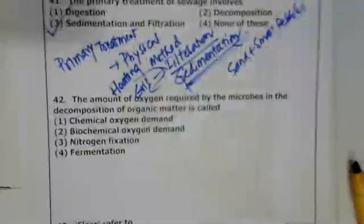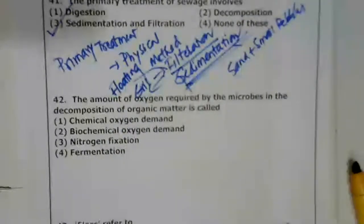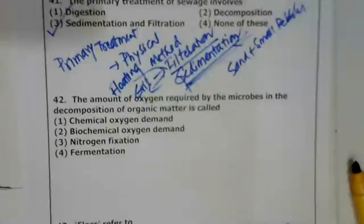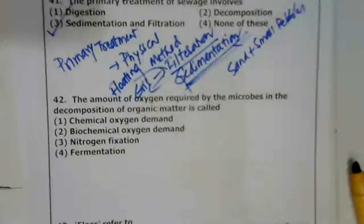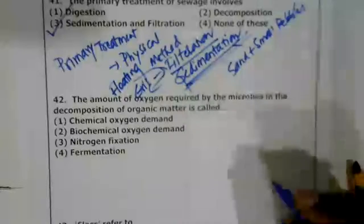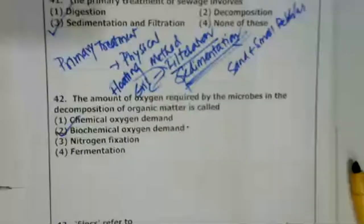Question 42: The amount of oxygen required by microbes in the decomposition of organic matter is called what? BOD — Biochemical Oxygen Demand — estimates the amount of oxygen required by microorganisms to degrade all organic matter present in one litre of sample. If organic matter is high and oxygen is low, aquatic life suffers. The answer is Biochemical Oxygen Demand (BOD).